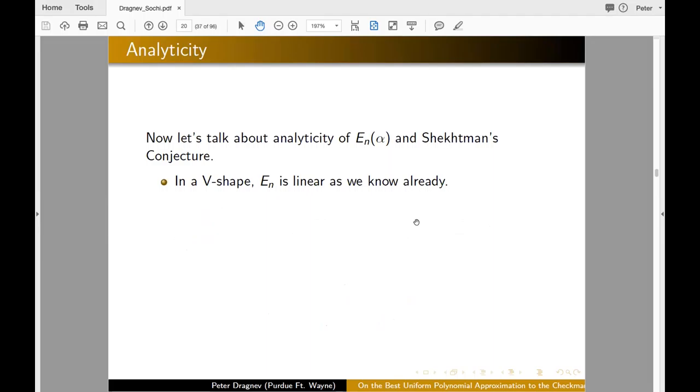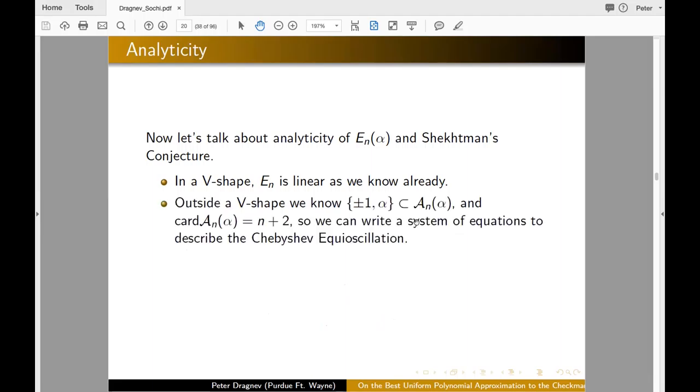Now, the analyticity, as I point out in a V shape, E_n is linear. And it's, of course, piecewise analytic at a V shape. It's not differentiable. The function E_n alpha, but everywhere else is. And outside V shape, what we know is that plus minus one and alpha are part of the alternation set. So there are n plus two exactly alternation points. So therefore there are n minus one points. We will call them U's and V's. And we will apply the analytic implicit function theorem to actually derive the differentiability of E_n alpha.